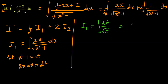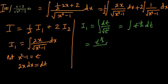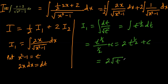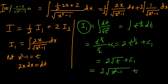Square root of t means t to the power of one half, and bringing it to the numerator gives t to the power of negative one half. Applying the power rule for integration, we get t to the power of negative one half plus 1, divided by negative one half plus 1. Since negative one half plus 1 equals one half, we get 2t to the power of one half plus c, which is 2 times square root of t plus c1. Substituting back t equals x squared minus 1, i1 equals 2 times square root of x squared minus 1 plus c1.